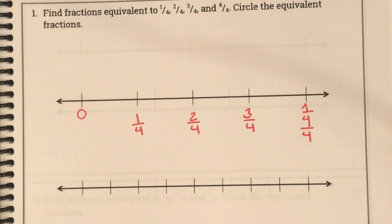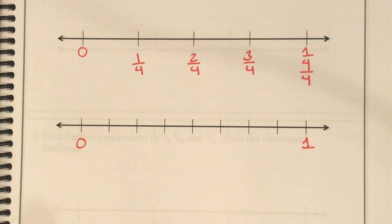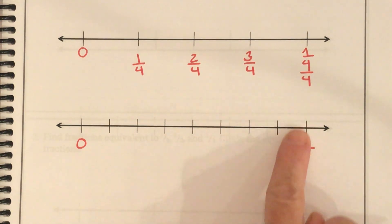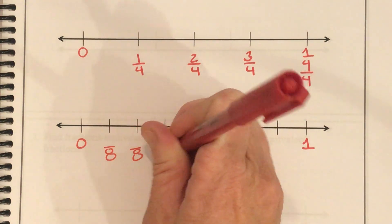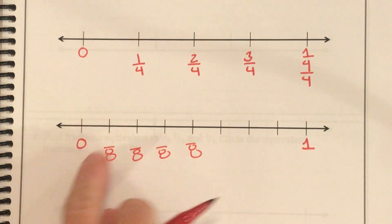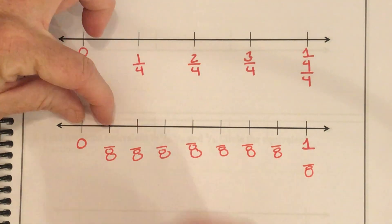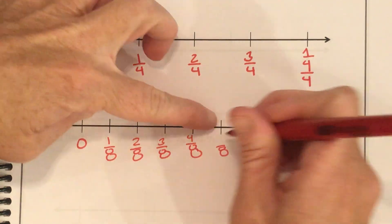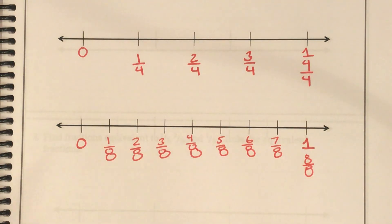Now let's look at the next number line. Again, I put zero and one. Then I count how many parts this whole one has been cut into: one, two, three, four, five, six, seven, eight. There are eight parts in the whole, which means my denominator is going to be eight. I put the fractions right underneath the line. Going from zero to one: one-eighth, two-eighths, three-eighths, four-eighths, five-eighths, six-eighths, seven-eighths, and eight-eighths — which is equal to one.